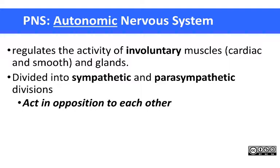The autonomic nervous system — when you hear autonomic, think automatic — regulates the activity of involuntary muscle, which includes cardiac heart muscle and smooth muscle associated with internal organs other than the heart. It is divided into two branches that act in opposite ways: the sympathetic and parasympathetic divisions contact the same organs, but their effects are opposite.